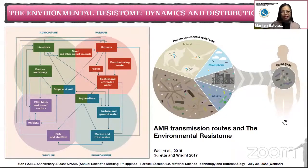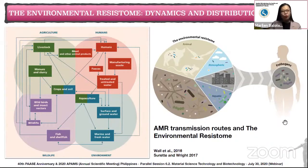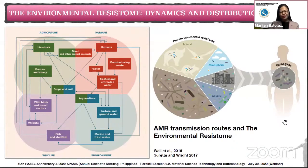Recent research points to the environment as an essential factor in the spread of AMR, as well as a possible reservoir of antimicrobial-resistant bacteria and AR genes. This includes soil, water, air, and even built environments. Wild and domestic animals are also sources of resistance genes and microbial species shared with humans. Shown here are the possible interactions and transmission pathways between agriculture, humans, the environment, and wildlife. Because the environment plays a multiple role in the spread and storage of AMR genes, more research is indeed needed.